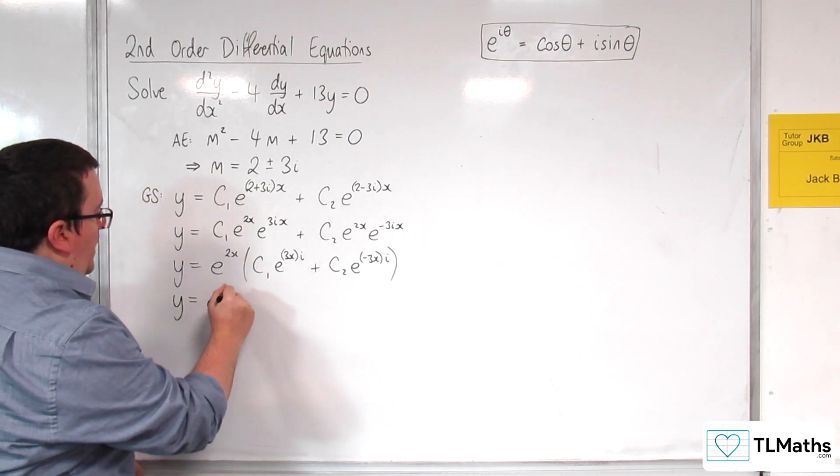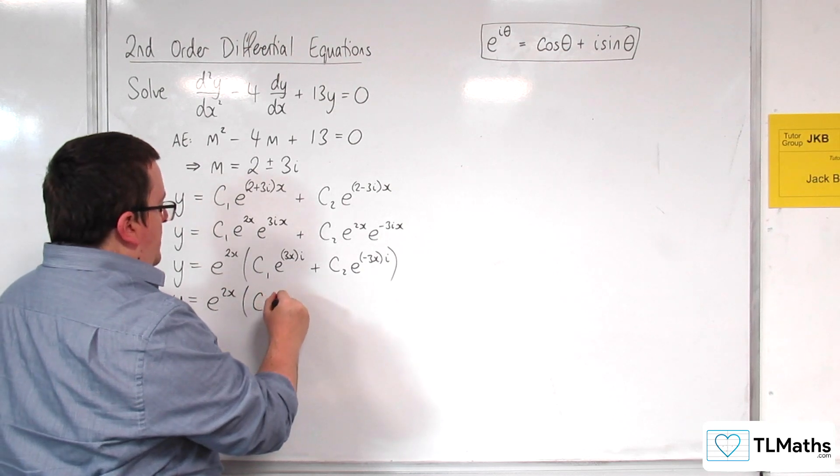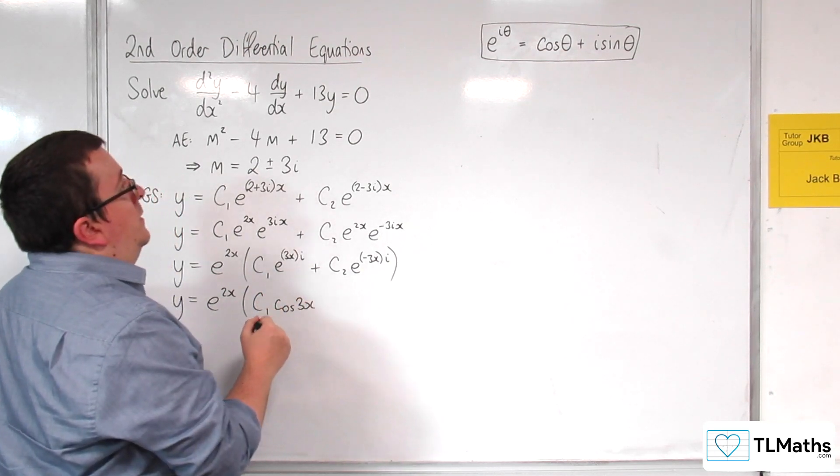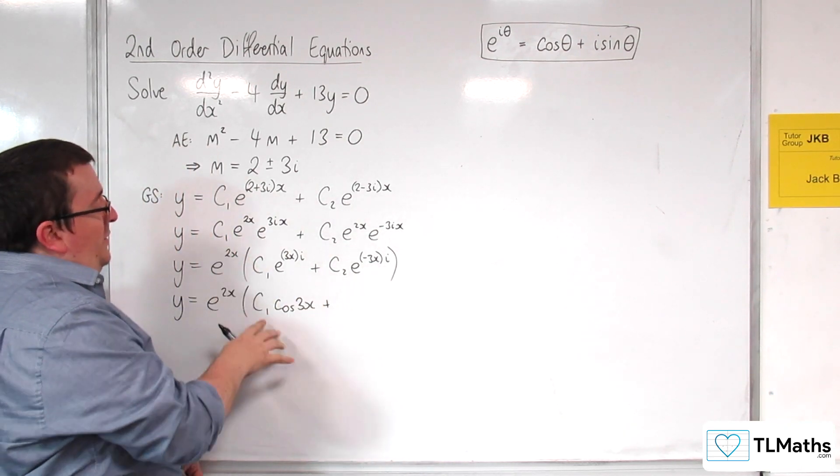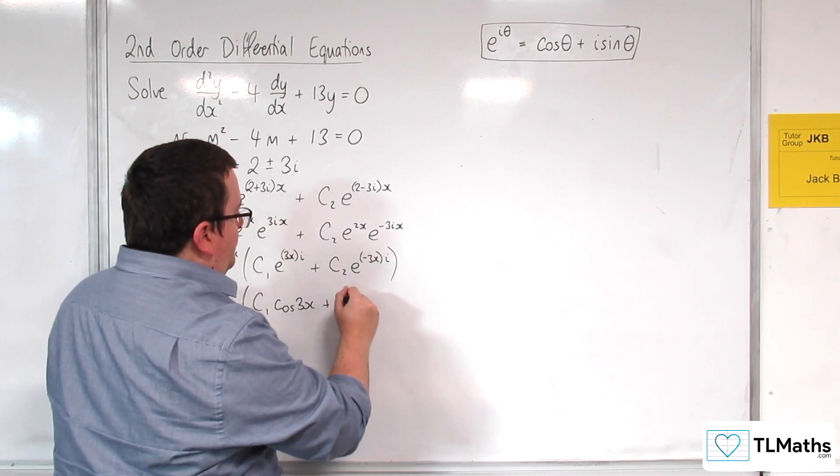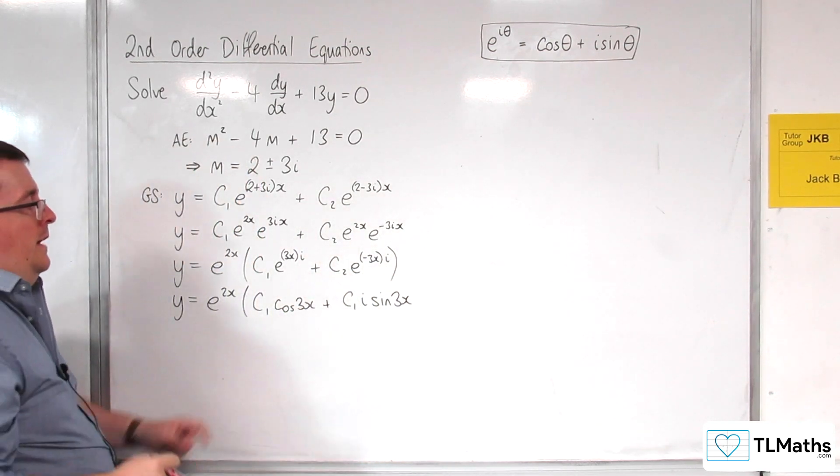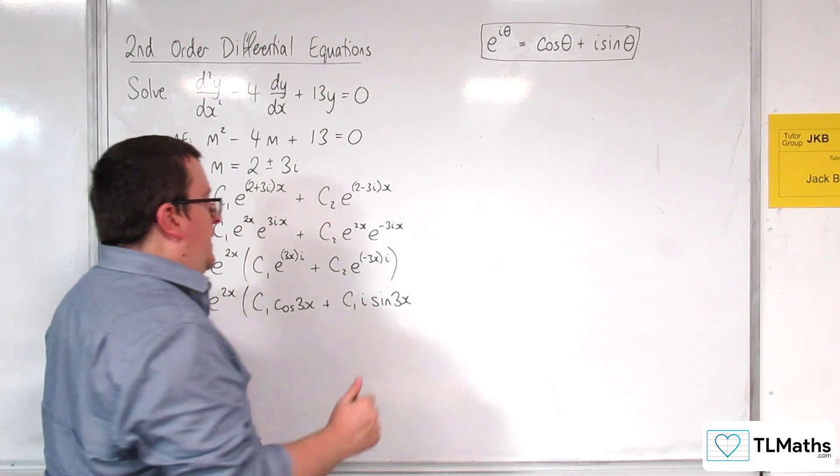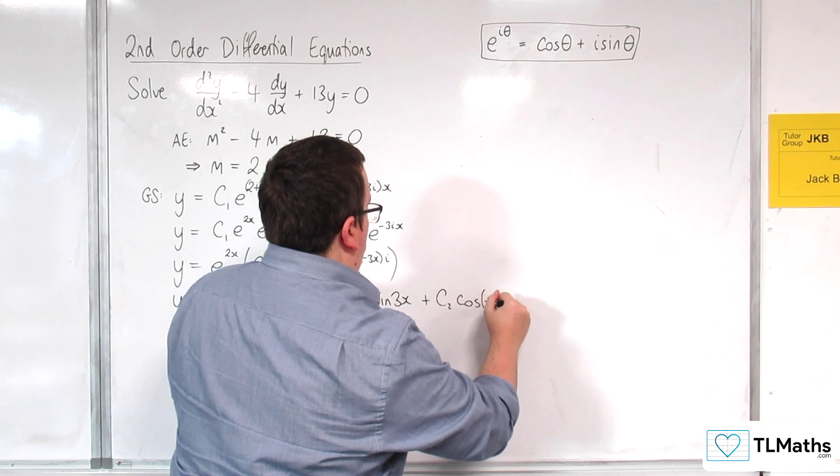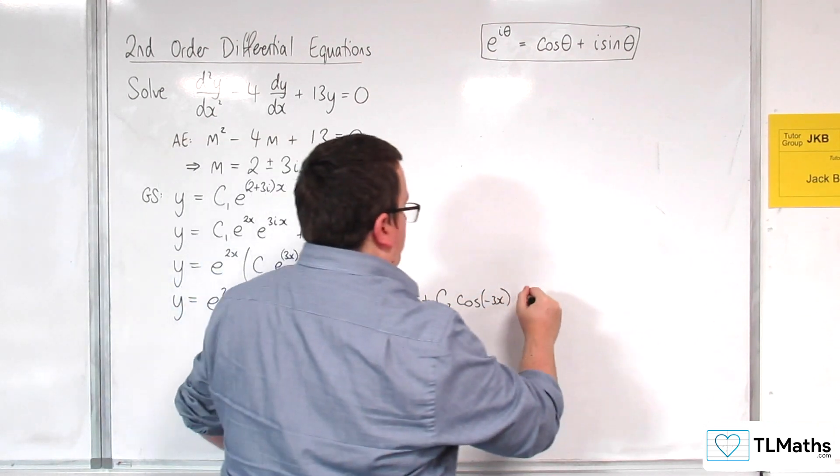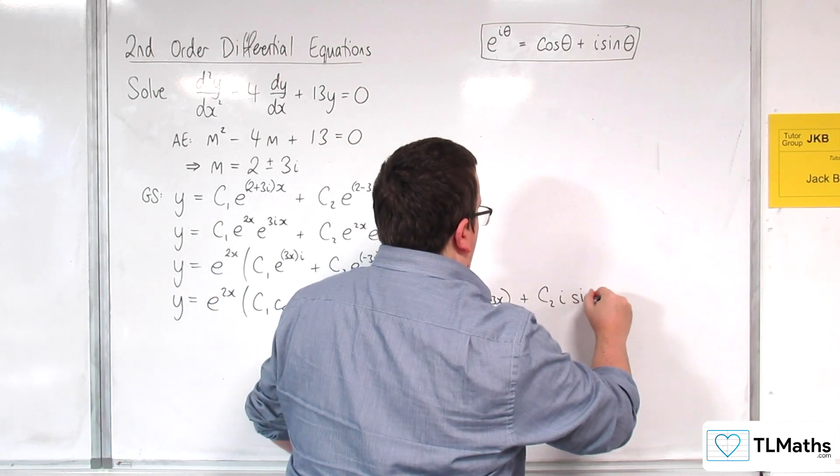Okay, y is equal to e to the 2x times by, then I'm going to get c1 times cosine of 3x plus i, well, plus c2, sorry, not c2, c1 times i sine of 3x. And then from here, we're going to get plus c2 cosine of minus 3x, plus c2 times i sine of minus 3x.